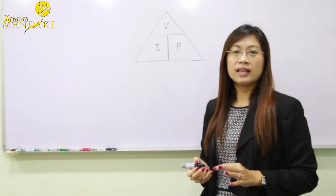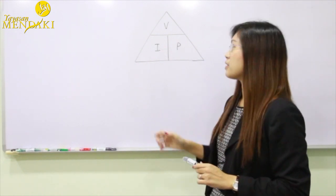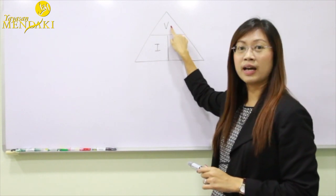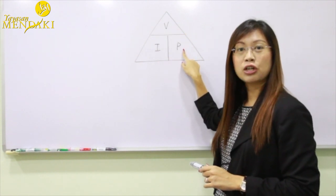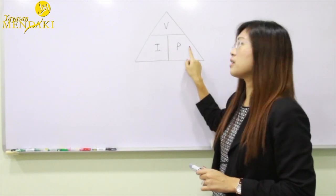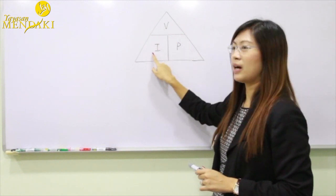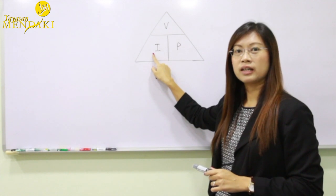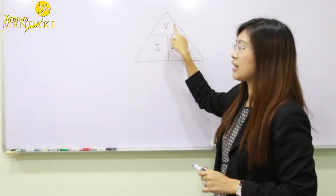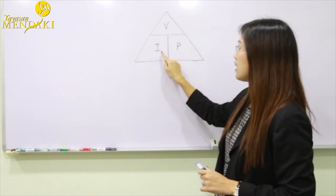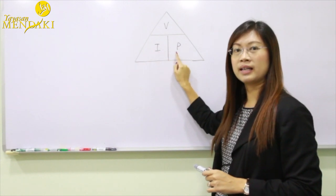Now to find the initial you have to take the value divided by the percentage. To find the percentage you're going to take the value divided by the initial. And to find the value, you're supposed to take the initial multiplied by the percentage.